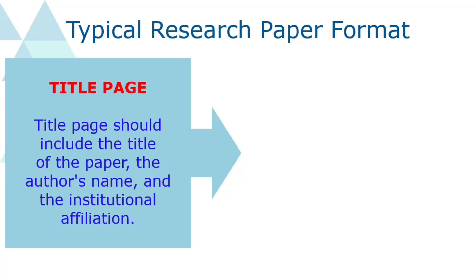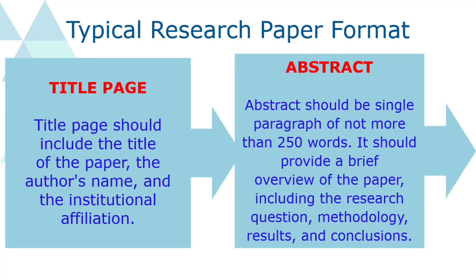We have already discussed how to choose the right title for a research paper — I am giving the link in the description box if you are new and can refer to it. Second is the abstract. In addition to the title that grabs readers' attention, a well-written abstract is what researchers, scientists, and even journal editors read first to identify whether the article is worth reading. The authors must highlight the novelty of the work.